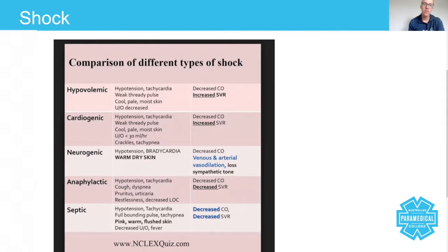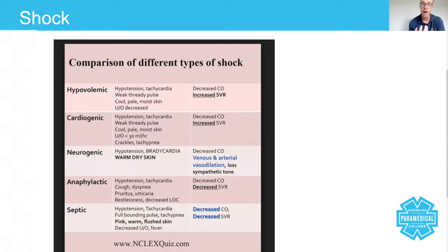So in the context of paramedic practice, when you're doing your primary survey, one of the first things you will do is try to identify time-critical features of your patient, and that's where identifying and rectifying shock comes into it. Because if shock is something that will kill your patient, and the primary survey is designed to help you identify any abnormal life threats, then putting the two together, you can see how you need to be able to recognize them.